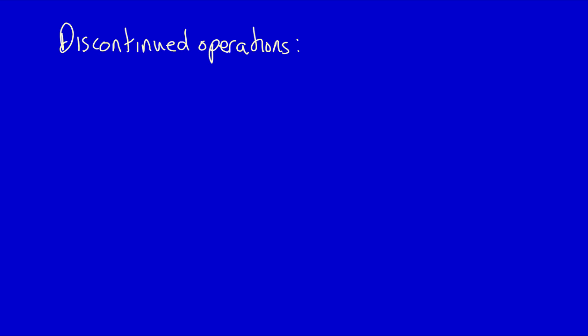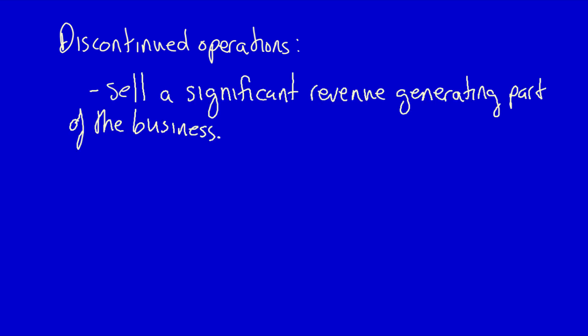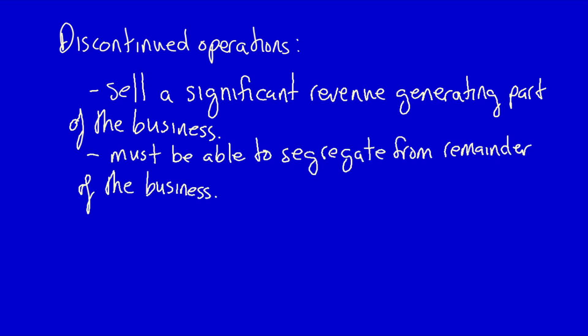Today we're going to talk about discontinued operations. Discontinued operations occur only when a company wants to sell a significant revenue-generating part of the business. Keep in mind that this portion of the business must be able to be segregated from the remainder of the business. In fact, discontinued operations have to be a separate component of the business.